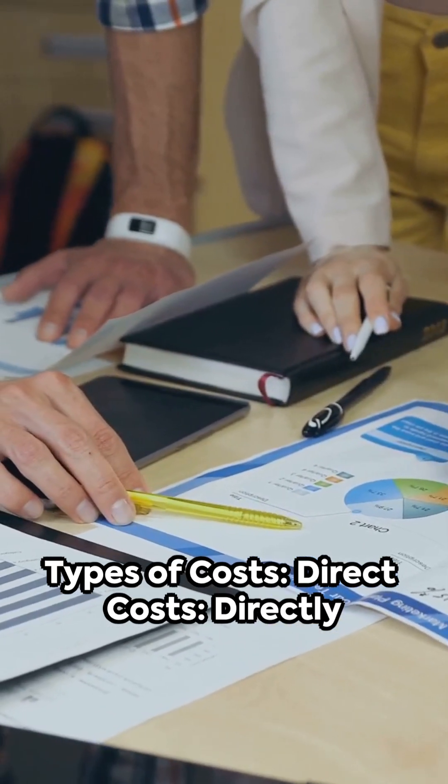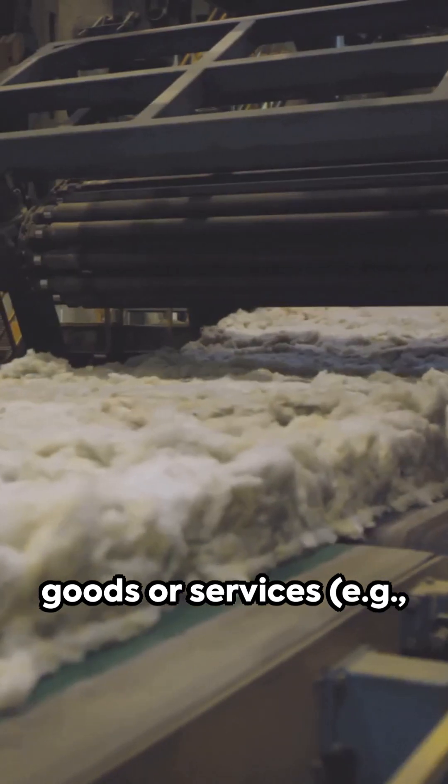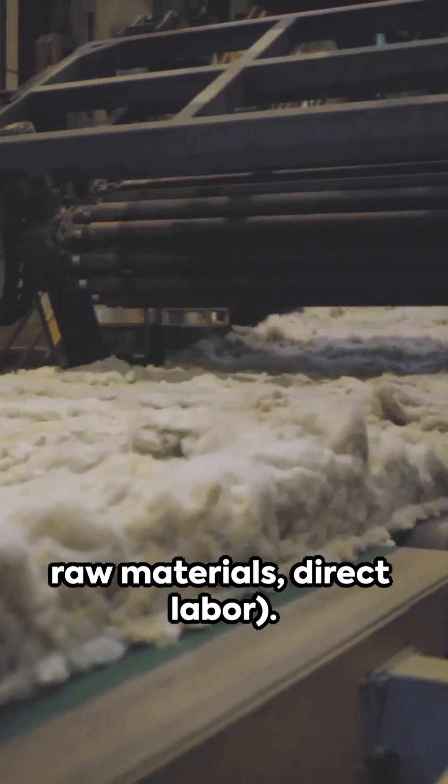Types of costs: Direct costs are directly attributable to the production of specific goods or services, for example, raw materials and direct labor.